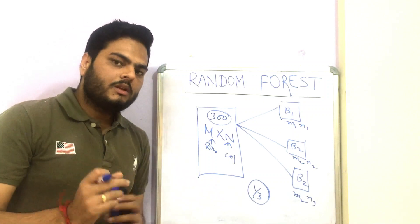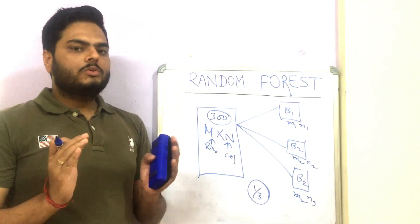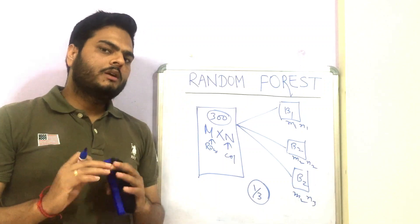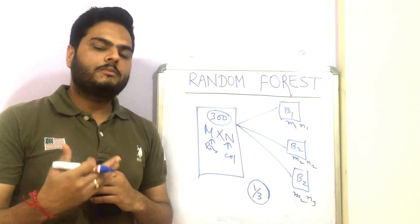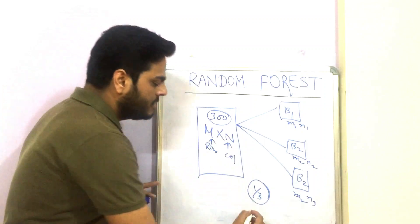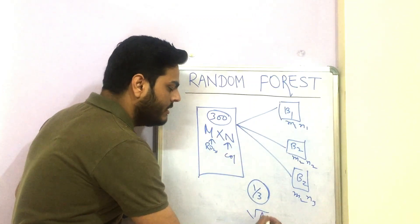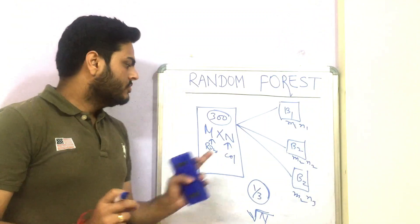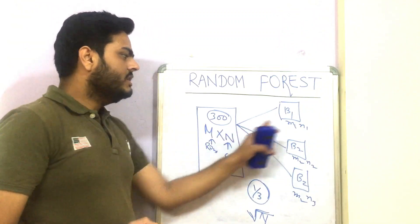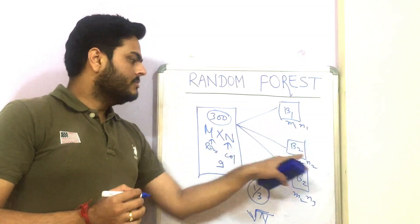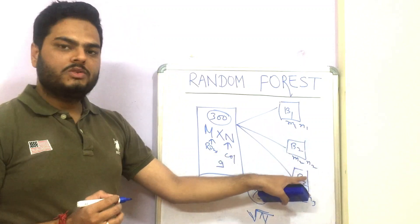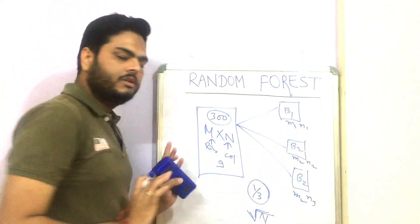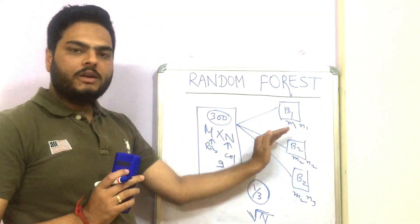For the optimal number of columns, there is no fixed rule, but the square root of capital N is a good starting point. So if we start with 9 columns, then 3 columns are randomly chosen for each bag, again with replacement, so columns may repeat across bags. This is how the bags are created.